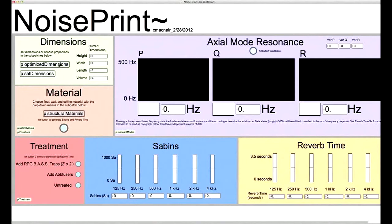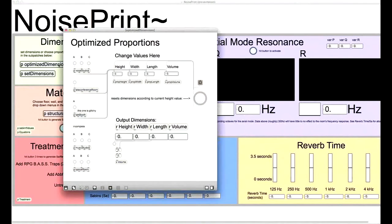There are two options: setting original dimensions, or choosing an optimized proportion. Let's look at the proportions.